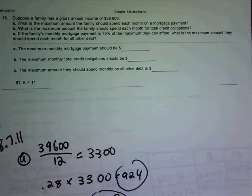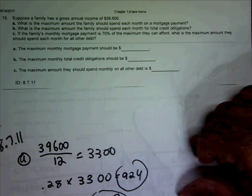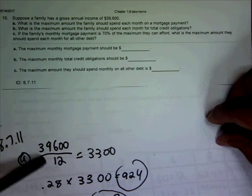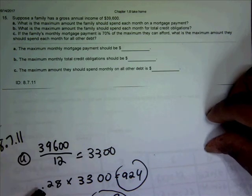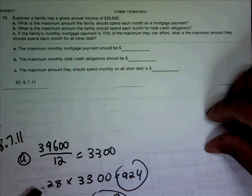So the first thing they ask here, what is the maximum amount the family should spend each month? We know that they have a gross annual income of $39,600. So their monthly income is going to be $3,300. The maximum amount they should spend on the mortgage should be 28% of that, or 0.28 times $3,300, or $924.